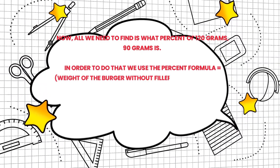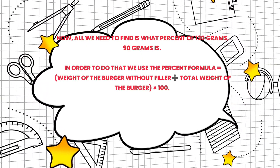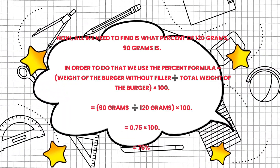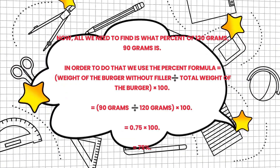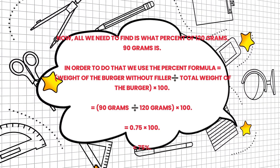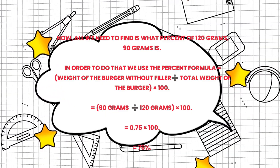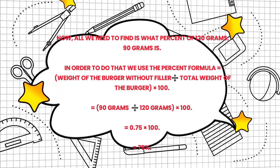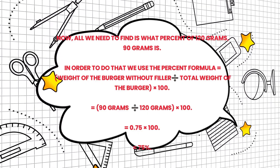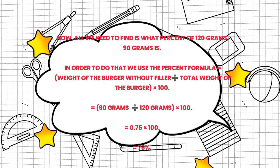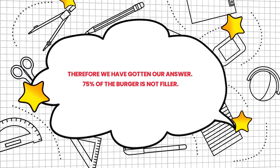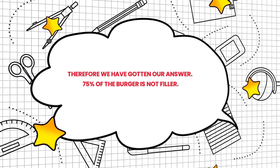Now all we need to find is what percent of 120 grams is 90 grams. In order to do that, we use the percent formula: weight of the burger without filler divided by total weight of the burger, times 100. That gives us 90 grams divided by 120 grams, times 100, equals 0.75 times 100, equals 75 percent. Therefore, 75 percent of the burger is not filler.